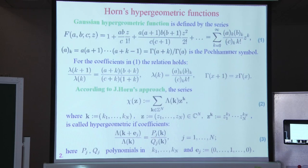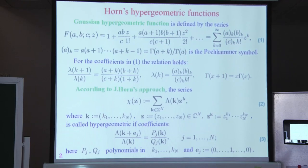The Gaussian hypergeometric function is defined by the Taylor series in variable Z. A, B, and C are complex parameters. The coefficients of this series are expressed in the form of the Pochhammer symbol or in the form of a ratio of gamma functions. This function includes many special functions, for example, Legendre functions of first and second kind, many orthogonal polynomials.